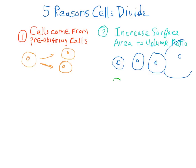It's much better if the cell, instead of getting bigger and bigger, divides to make more smaller cells, like this. These smaller cells have a bigger surface area as compared to their volume.